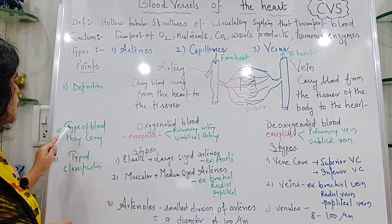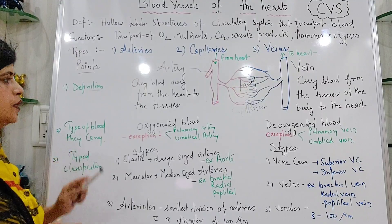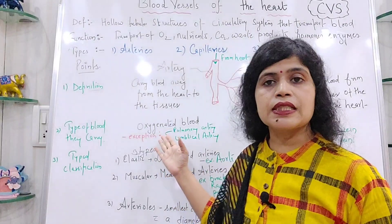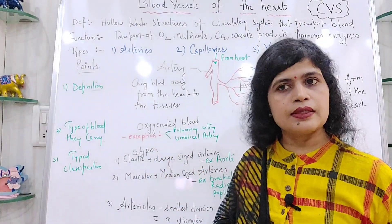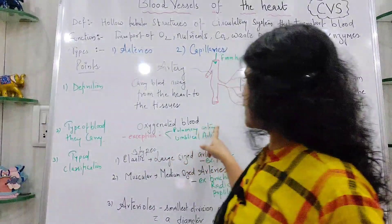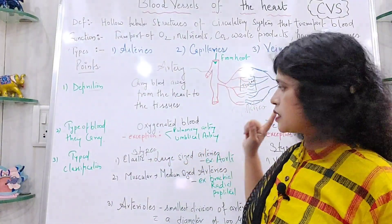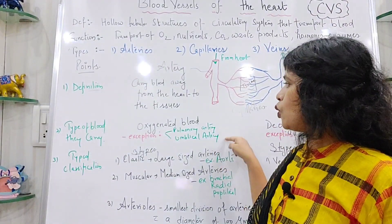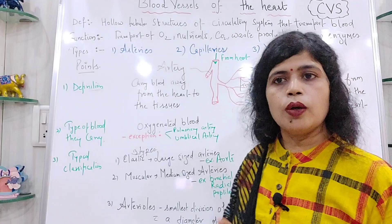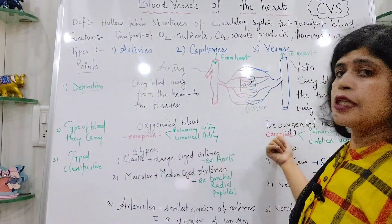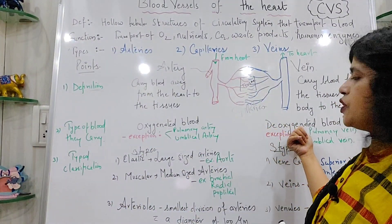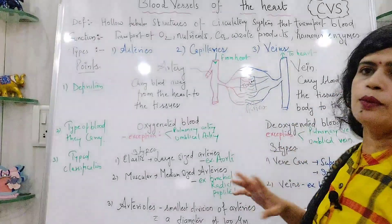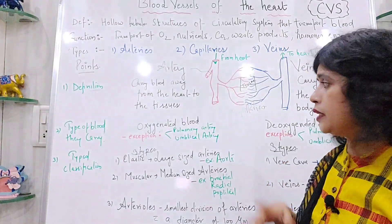Arteries carry oxygenated blood — that is, blood with more oxygen content and less carbon dioxide. There are two exceptions: the pulmonary artery and the umbilical artery, which carry deoxygenated blood. When it comes to veins, they carry deoxygenated blood, but again there are exceptions — the pulmonary vein and umbilical vein both carry oxygenated blood.